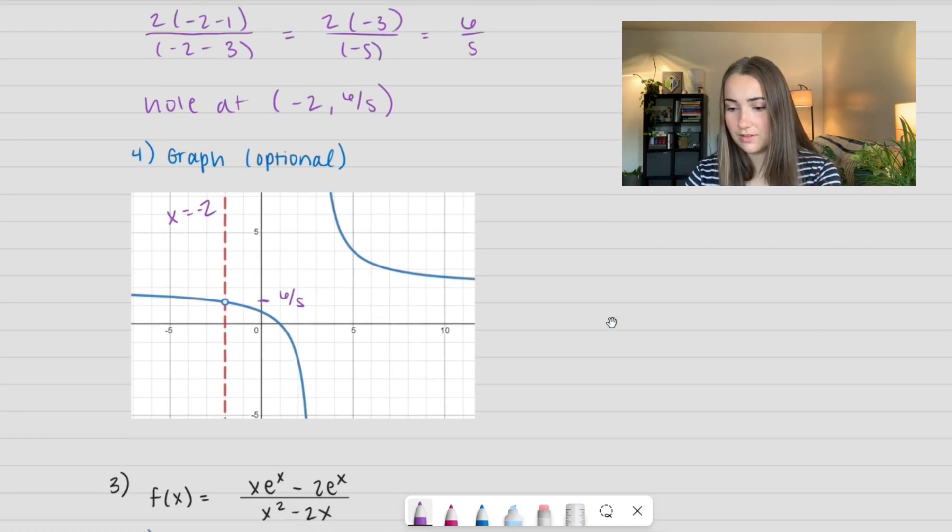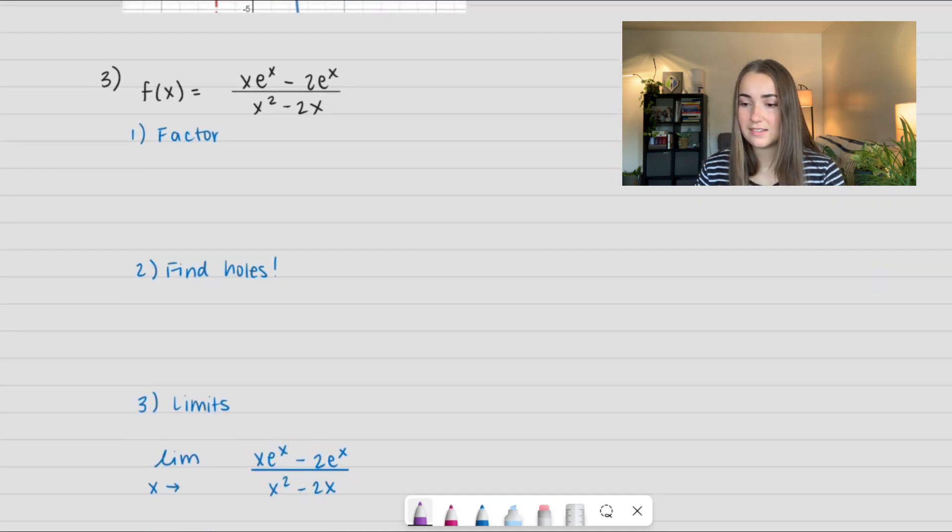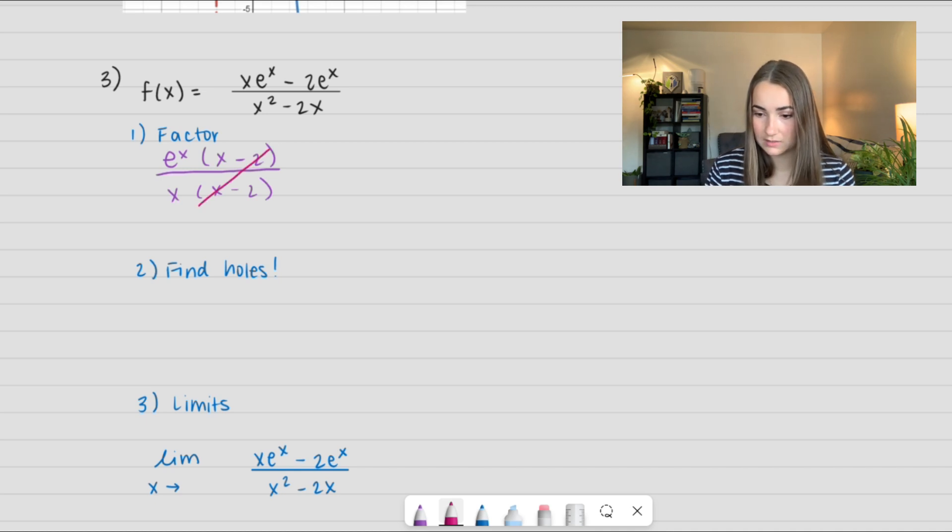Let's see another example. Here we have example 3: f(x) = (xe^x - 2e^x)/(x²-2x). In the numerator I'm going to pull out e^x and I get (x-2). And in the denominator I'm going to pull out x and I get (x-2). So paying attention to what terms divide out, I get x-2 = 0, and that tells me I have a hole at x = 2. I'm going to keep simplifying this because it's written as e^x/x.